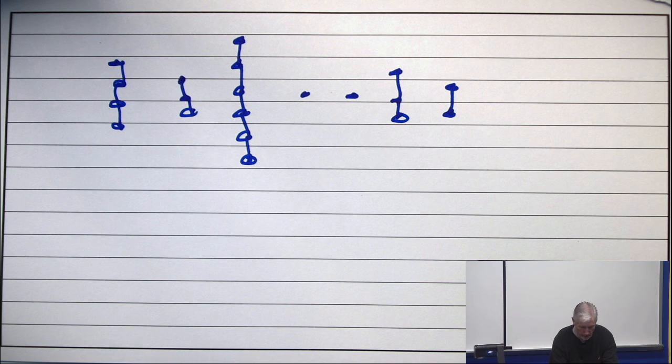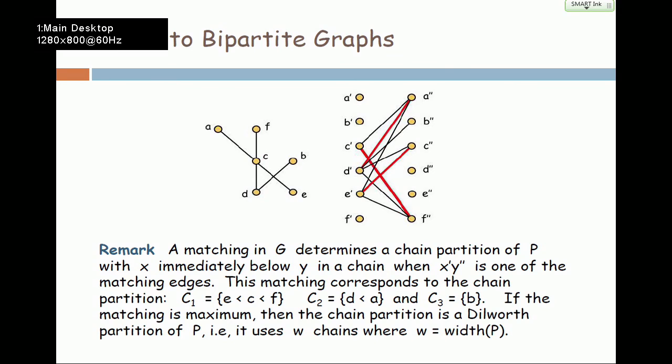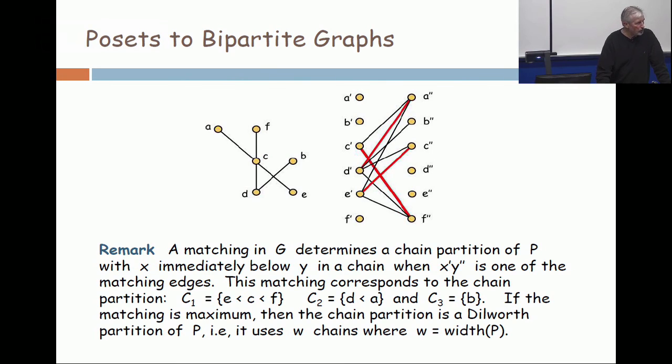Let's go back to this example. You see, I might not even draw the picture of the bipartite graph. I just list the three edges. I say the three edges in the matching are C prime F double prime, D prime A double prime, and E prime C double prime. And then I say, which chain partition is associated with those?